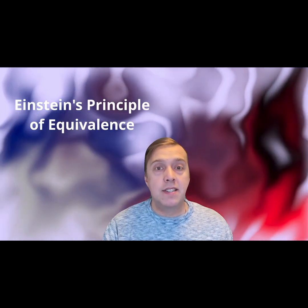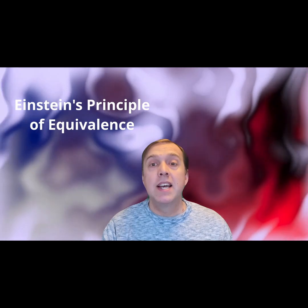To understand how time is influenced by spacetime curvature, we first have to understand Einstein's principle of equivalence. This states that a uniform gravitational field is exactly equivalent to a system with a constant acceleration.